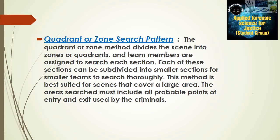The last method is the quadrant or zone search pattern: this method divides the crime scene into zones or quadrants, and team members are assigned to search each section. For example, a room is divided into four parts. Each section can be subdivided into smaller sections for smaller teams to search thoroughly. This method is best suited for scenes that cover a large area, and the area searched must include all probable points of entry and exit used by the criminal.